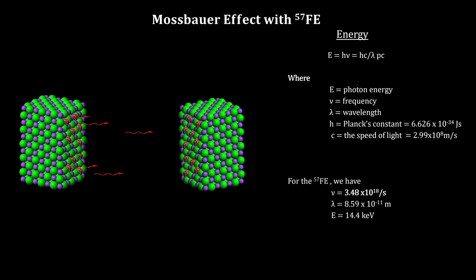What Mossbauer discovered was that if he embeds the iron atoms in a crystal, the recoil is reduced dramatically, and absorption can be re-established.